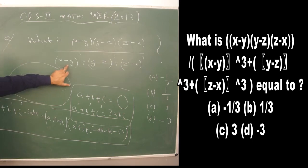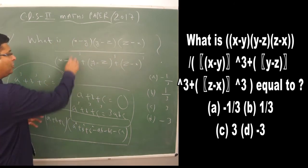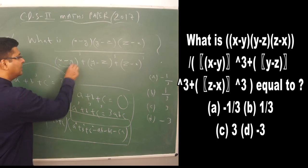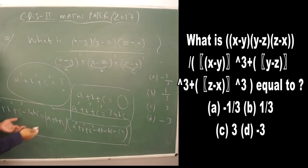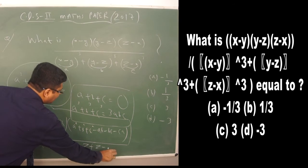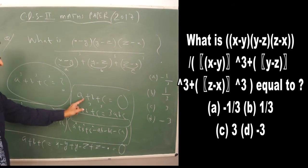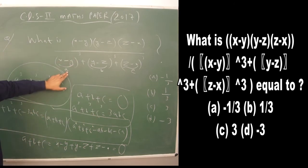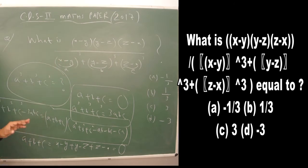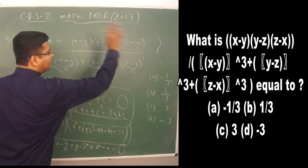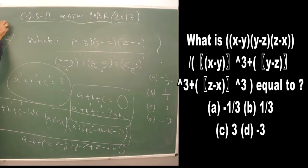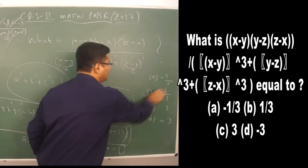Let a = x−y, b = y−z, c = z−x. Then a + b + c = (x−y) + (y−z) + (z−x) = 0. So a³+b³+c³ = 3abc = 3(x−y)(y−z)(z−x). The expression becomes (x−y)(y−z)(z−x) / [3(x−y)(y−z)(z−x)] = 1/3, which is option B.